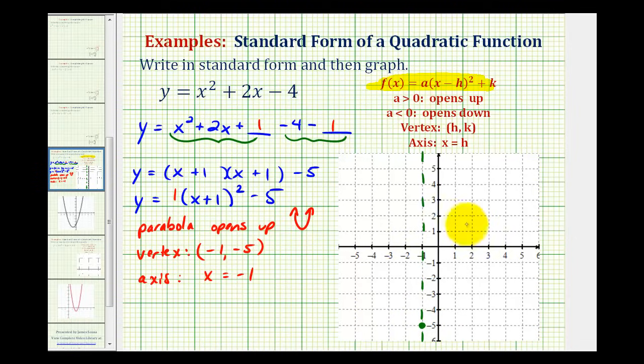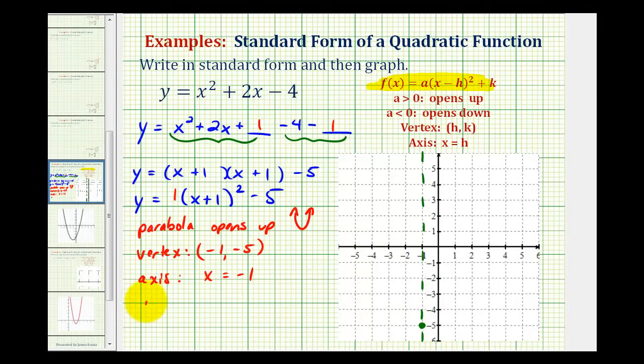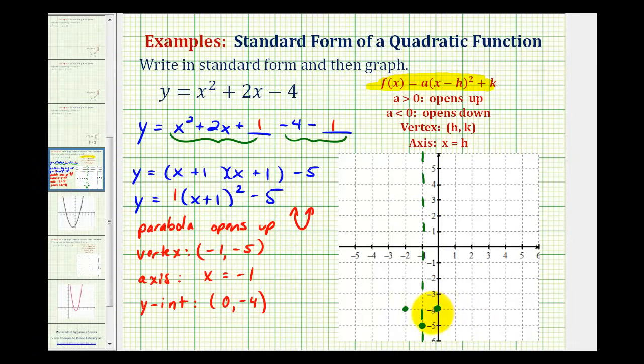Now we know this parabola opens up, but let's go ahead and find some additional points to make a more accurate sketch. Remember, if we wanted to find the y intercept, we would have to set x equal to 0. If we do this in the original form of the equation, notice that this would be 0, this would be 0, and y would be equal to negative 4. So the y intercept is the point with coordinates 0, negative 4, which would be this point here, and then because we have the axis of symmetry sketched, we know there's going to be another point, one unit to the left of the axis, so there must also be a point here due to the symmetry across the axis of symmetry.